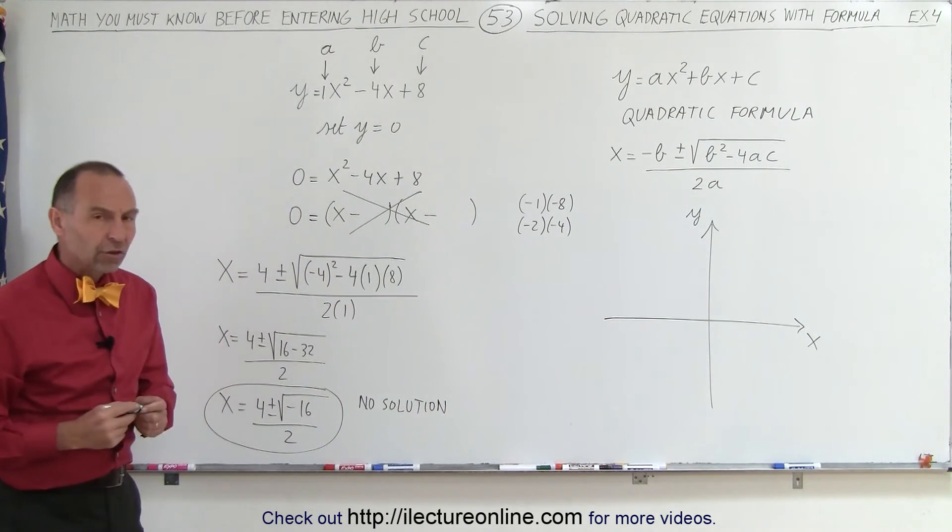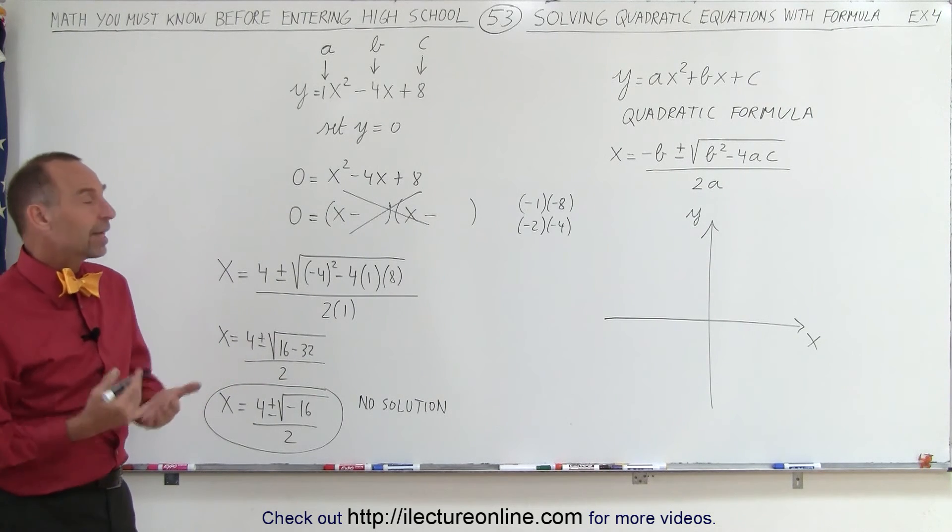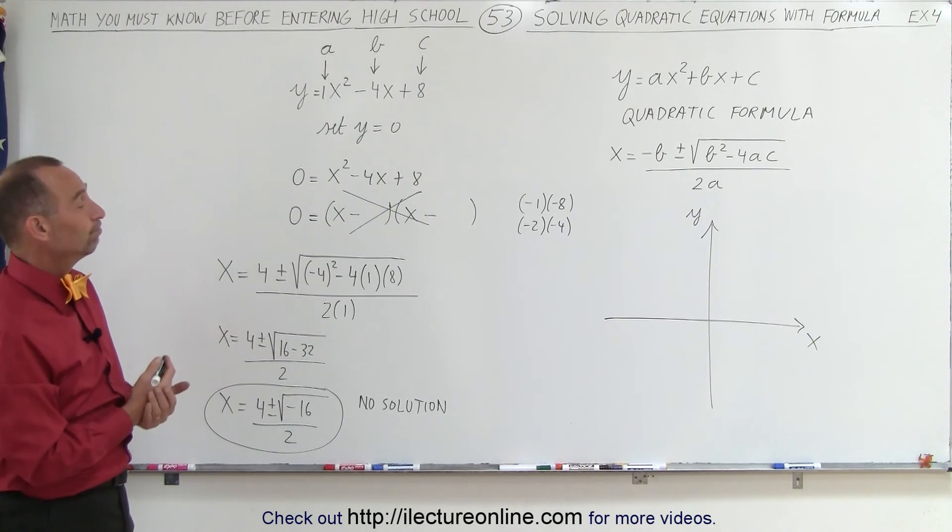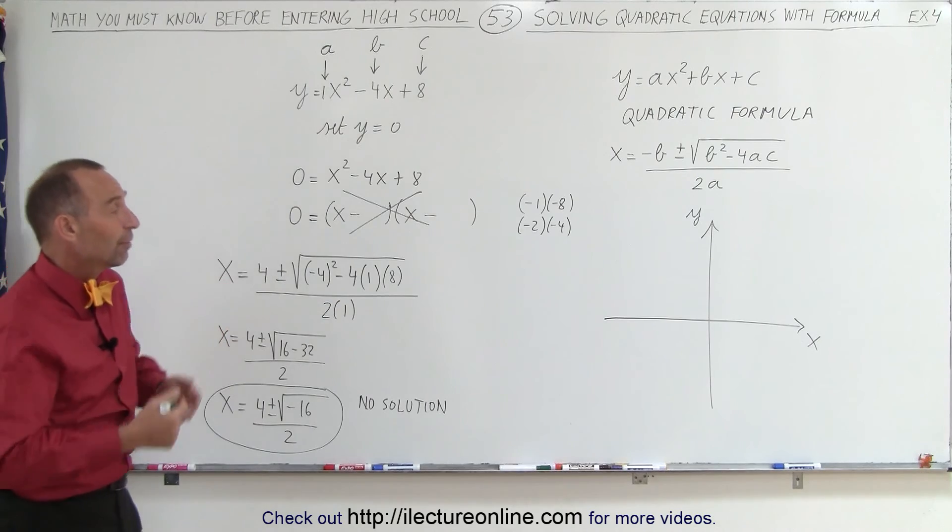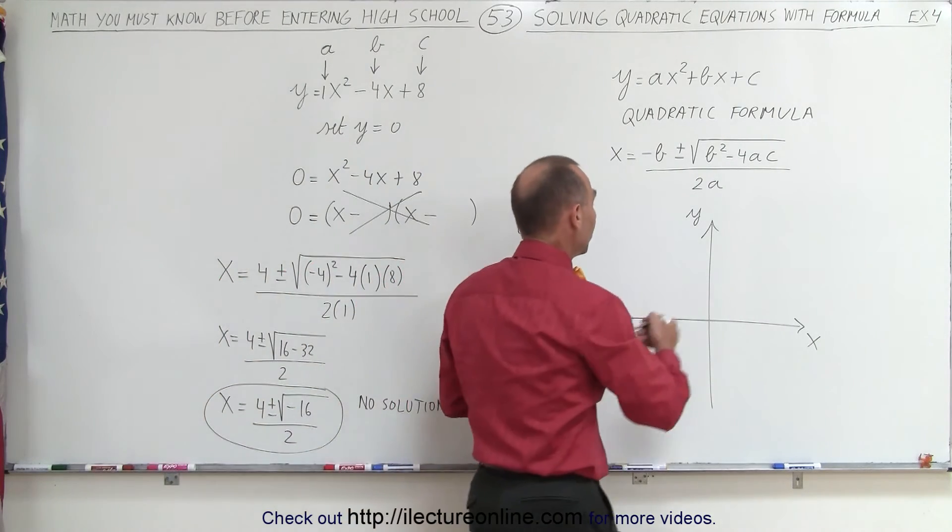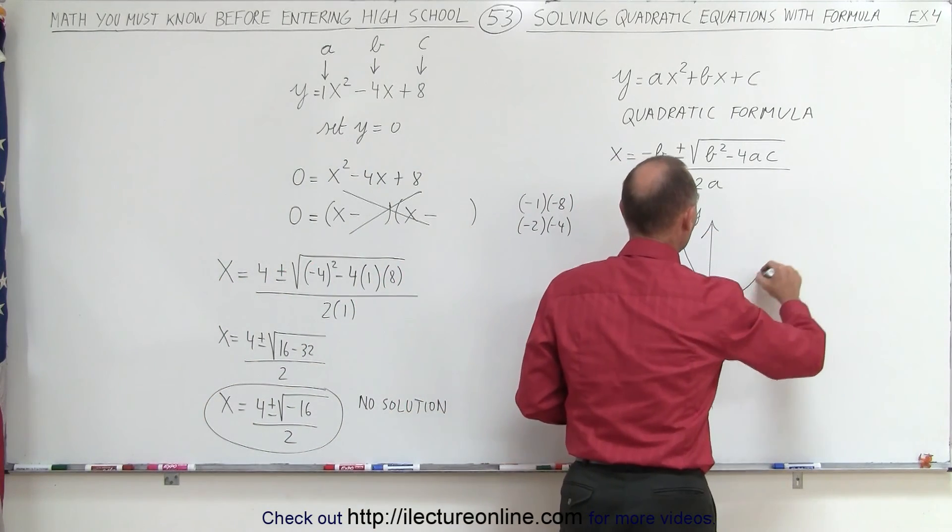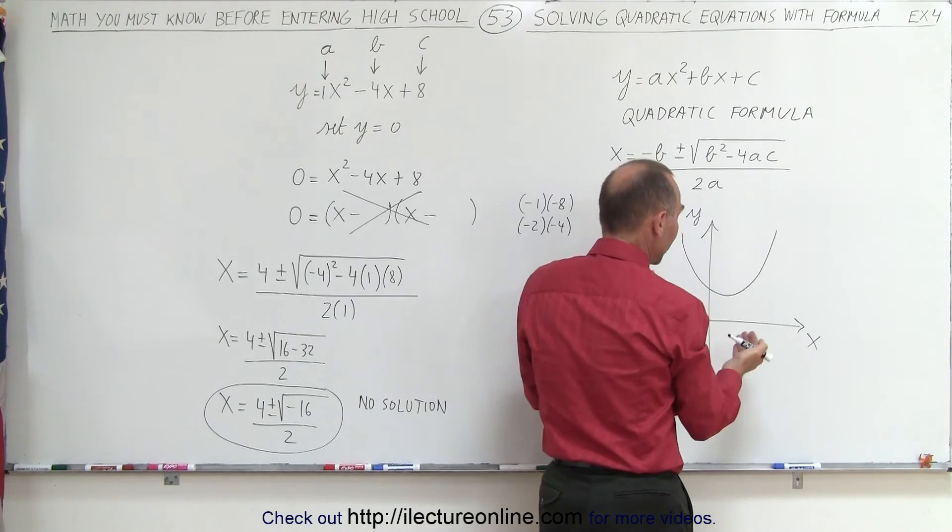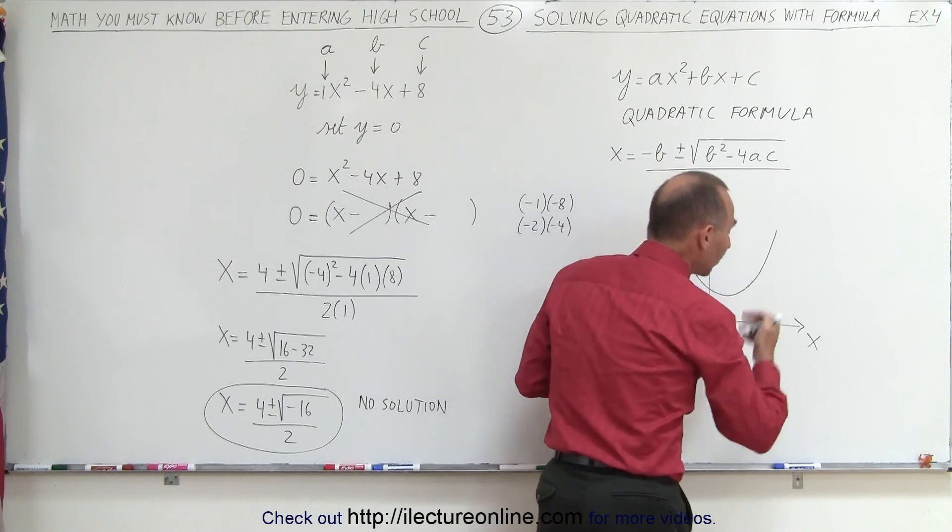In other words, the graph doesn't actually cross the x-axis. The graph probably stays above the x-axis. The solution probably looks something like this, or I should say the graph looks something like this, and the graph never crosses the x-axis.